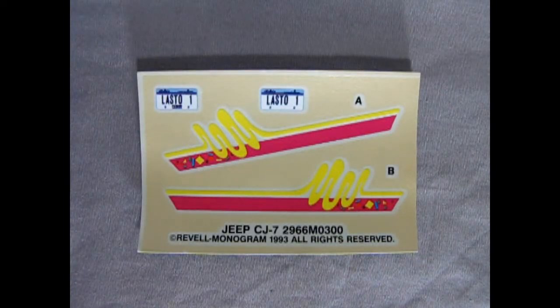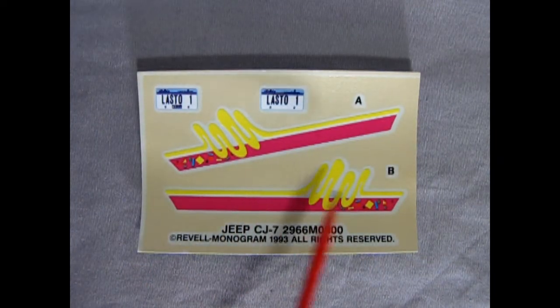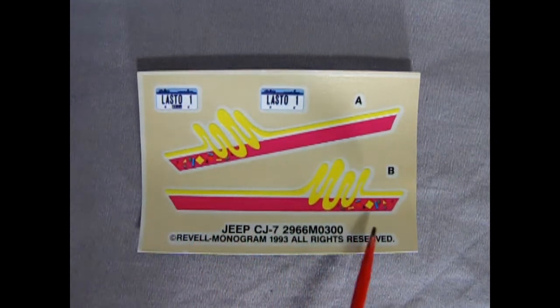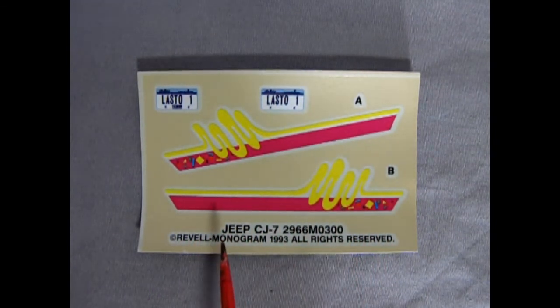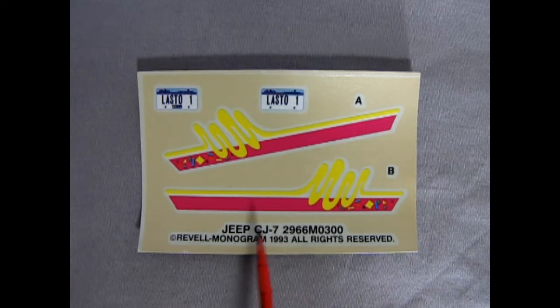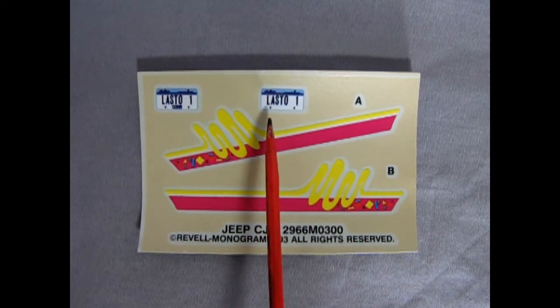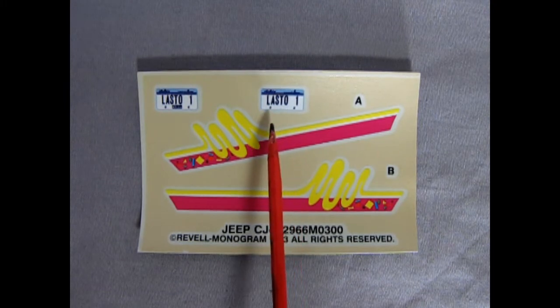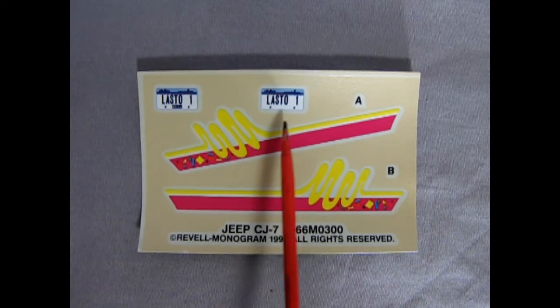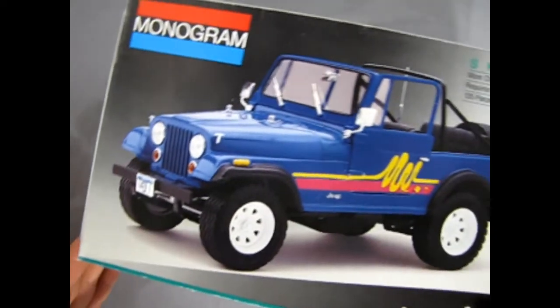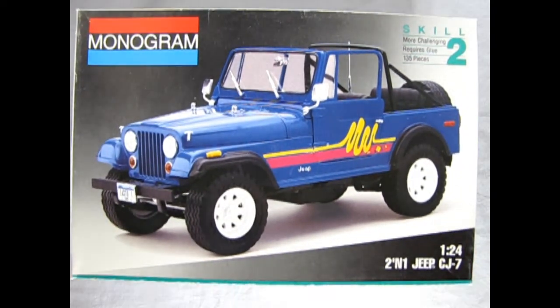Now you can tell that your model kit came from the 90s when you find graphics in it like this. This of course is sort of the end of the 80s graphics in the beginning of the 90s and here we have a license plate that says Lasto 1. So I guess this model was built to Lasto. And that completes our look at our 1977 two-in-one Jeep CJ7 by Monogram.